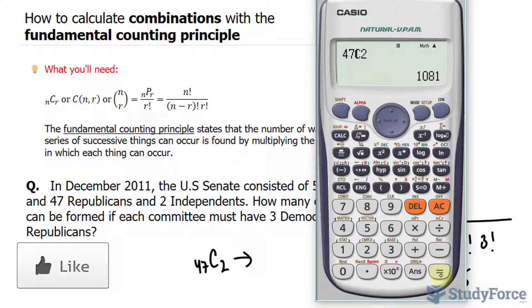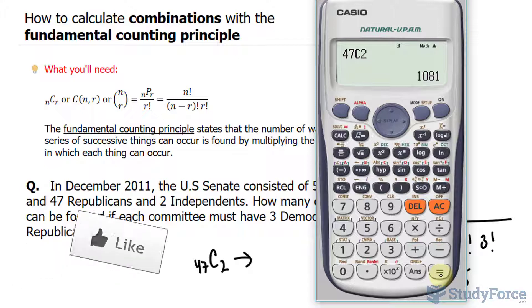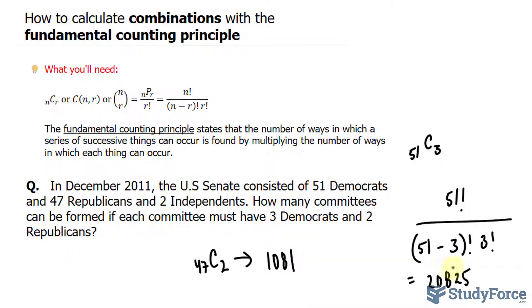Now that we found these two critical numbers, we use the fundamental counting principle to find the number of committees that can be formed. So technically what I'll do is multiply this number with this number, because according to the fundamental counting principle, the number of ways in which a series of successive things can occur is found by multiplying the number of ways in which each thing can occur.